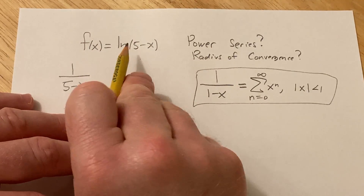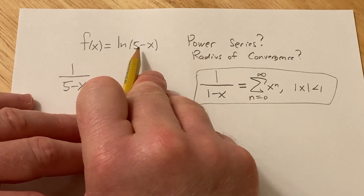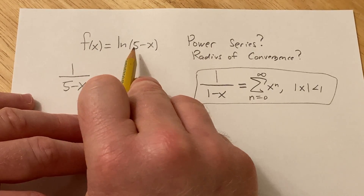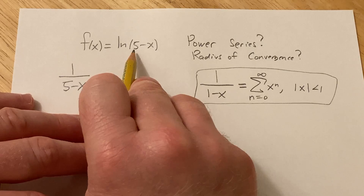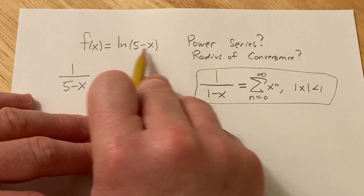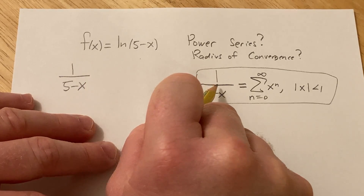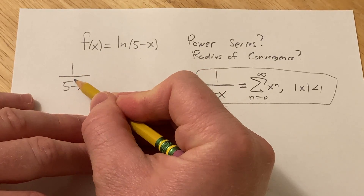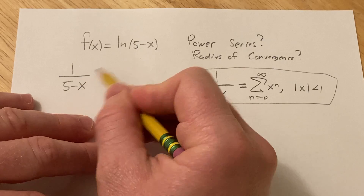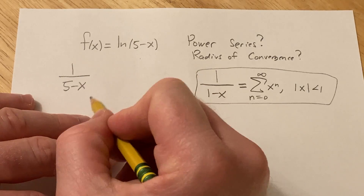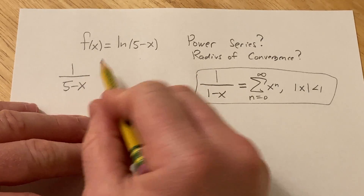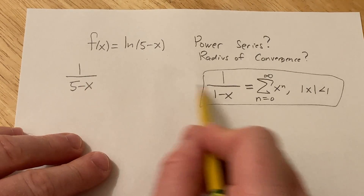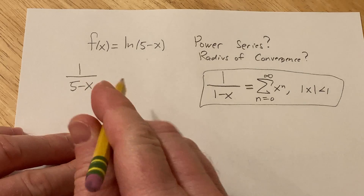You see 1/(5-x) as the function you're trying to find a power series for, and you notice that if you integrate 1/(5-x) you're almost going to get ln(5-x). So we need some clever manipulation in order to use the geometric series formula.